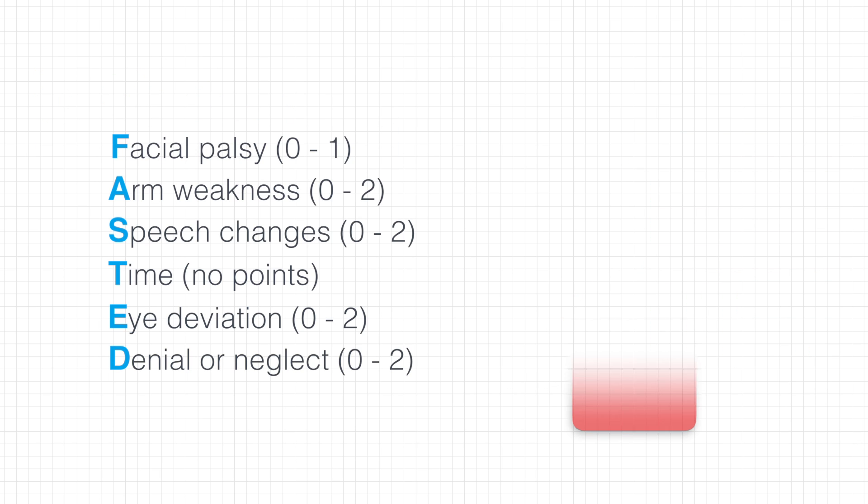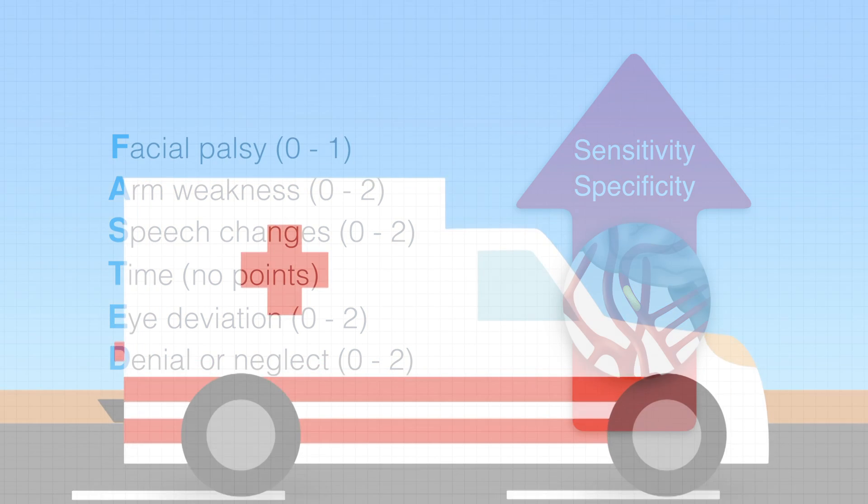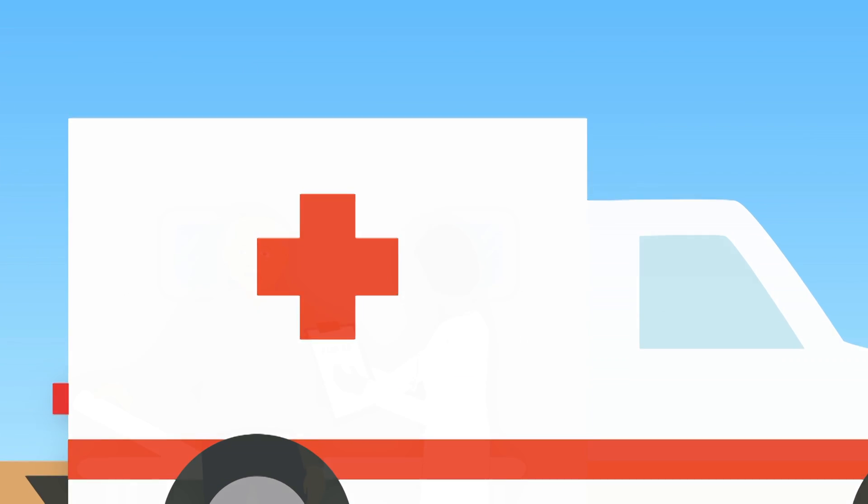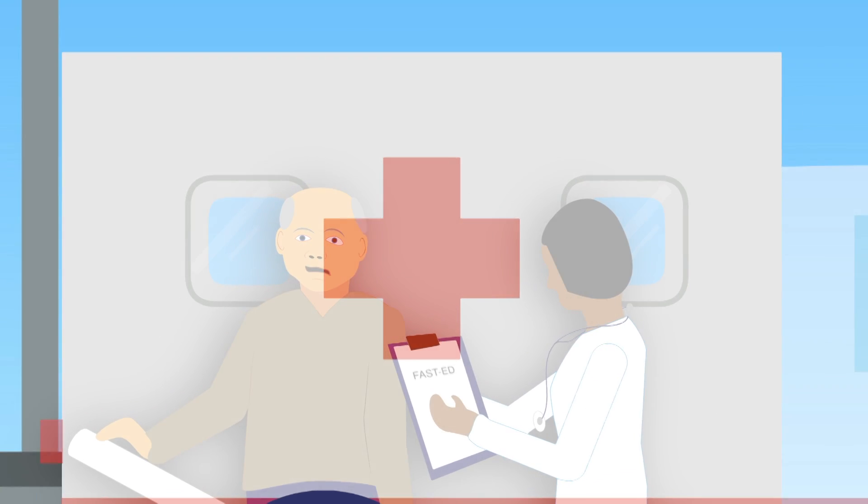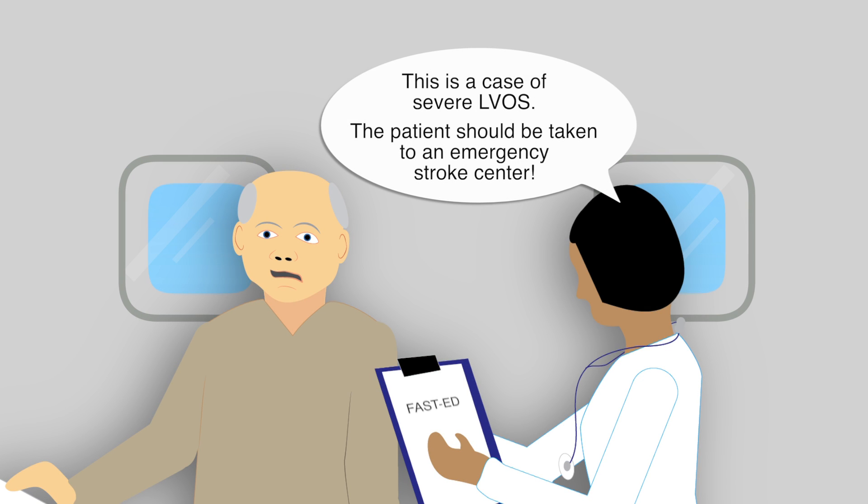FAST-ED is a simple scale with high sensitivity and specificity meant for the detection of LVOS. It is a promising tool that could be useful for paramedics to accurately identify LVOS in pre-hospital settings and allow appropriate triage of patients to the most suitable stroke center in the least time possible.